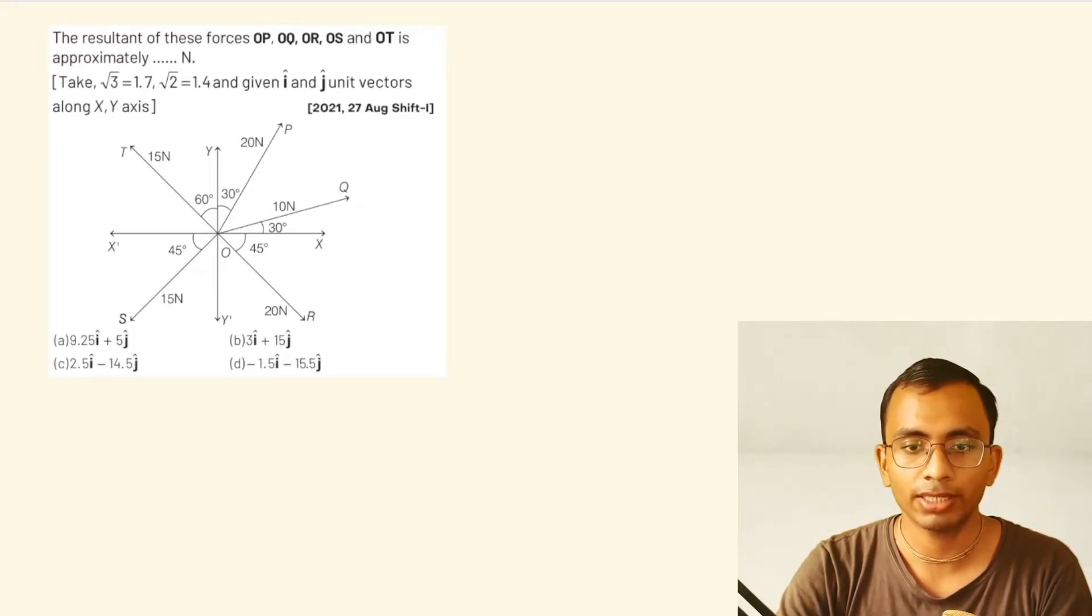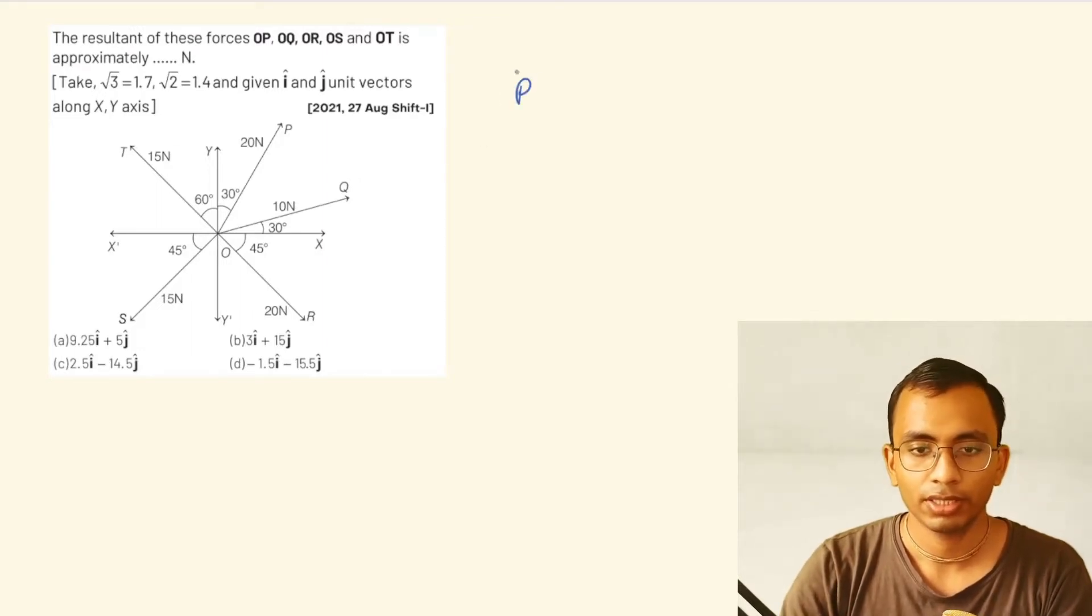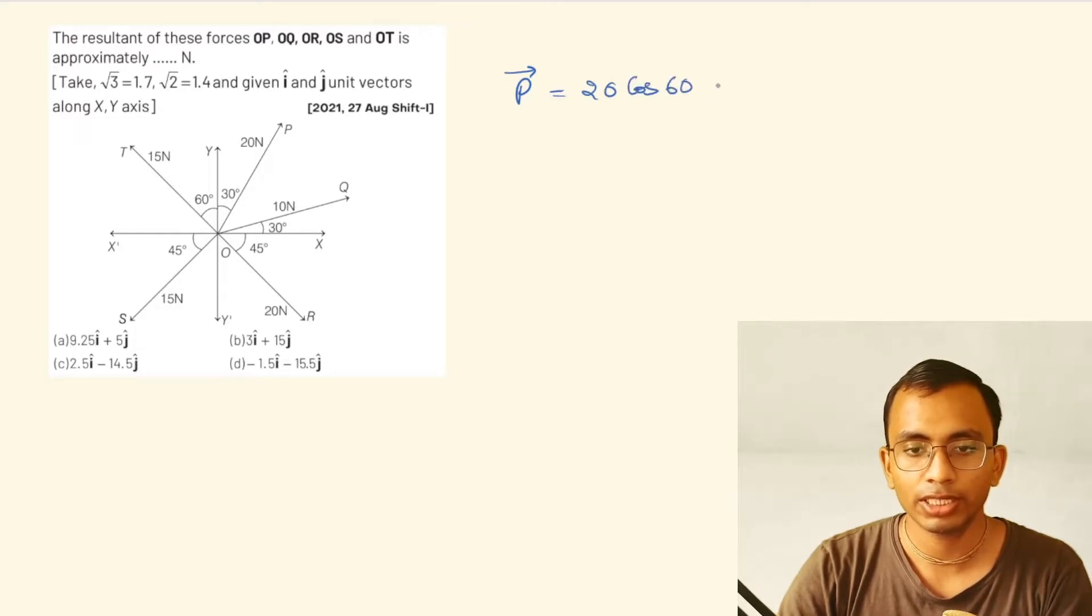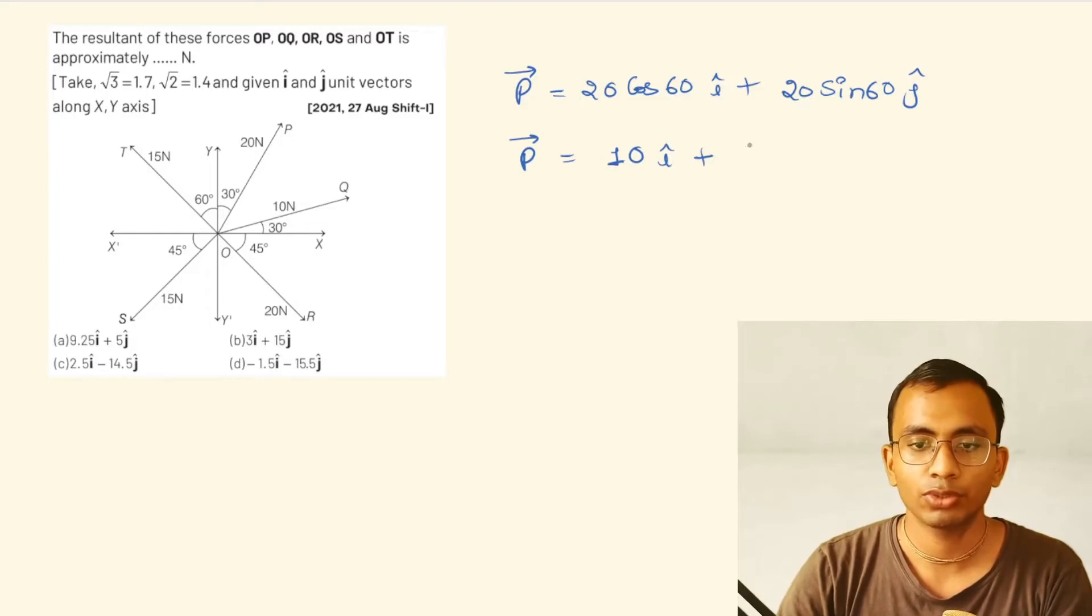Let us start with vector P. Its magnitude is 20 and it makes an angle of 60 degrees with the x-axis. So it would be 20 cos 60° î + 20 sin 60° ĵ. P equals 10 î, since cos 60° is 1/2, plus 10√3 ĵ, since sin 60° is √3/2.